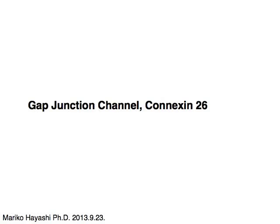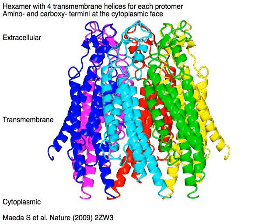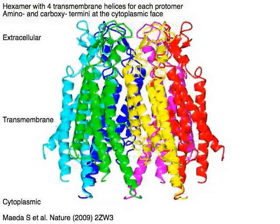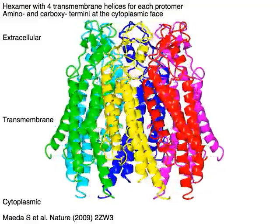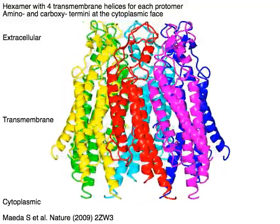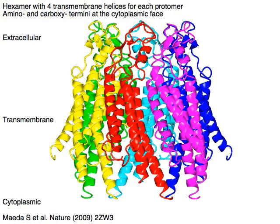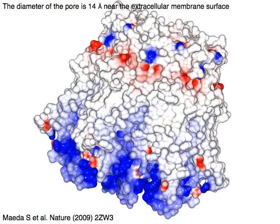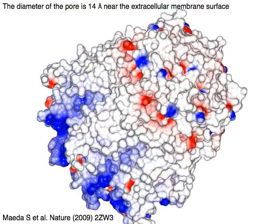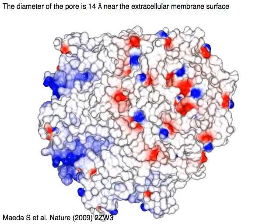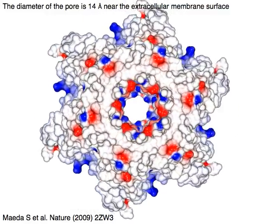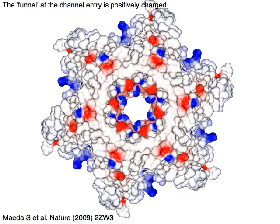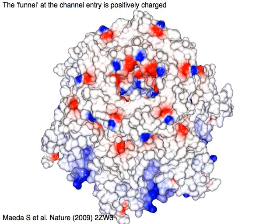Gap junction channel, connexin 26, has four transmembrane helices for each protomer, with both amino and carboxy termini at the cytoplasmic face. The diameter of the pore is 14 angstroms near the extracellular membrane surface. The funnel at the channel entry is positively charged.